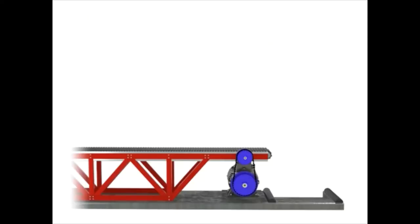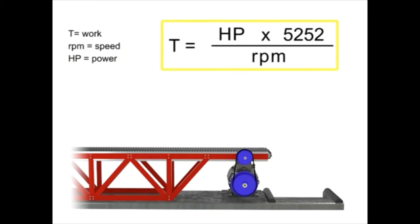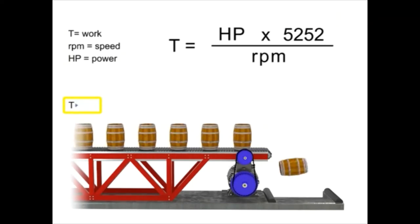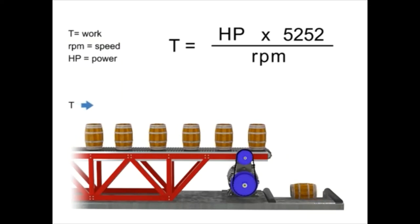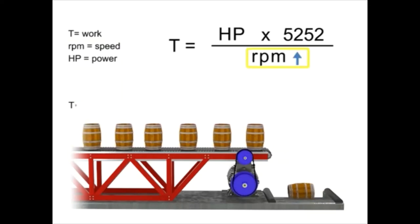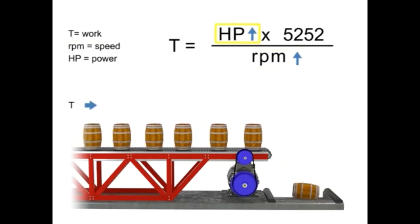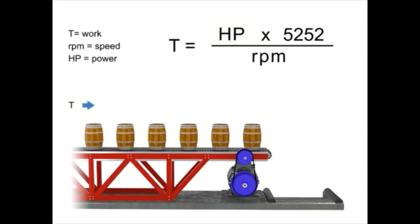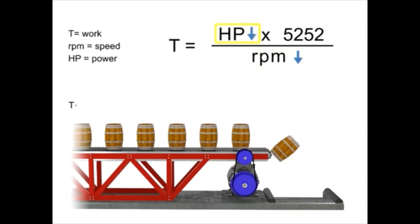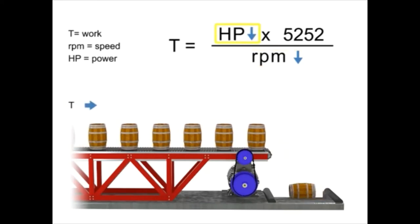You can manipulate the connection among speed, torque, and horsepower by understanding how they are related. The work accomplished here — the torque — is represented by the weight moving along the conveyor. If torque remains constant, speed and horsepower are proportional. As the speed, or RPM, increases, horsepower increases to maintain constant torque. If speed decreases, horsepower decreases to maintain constant torque.